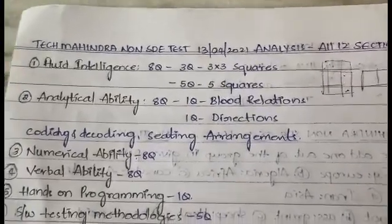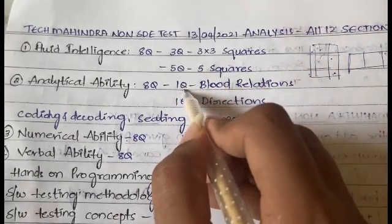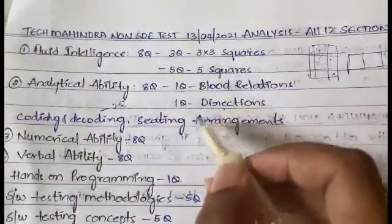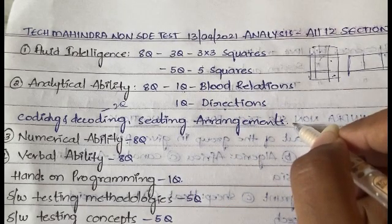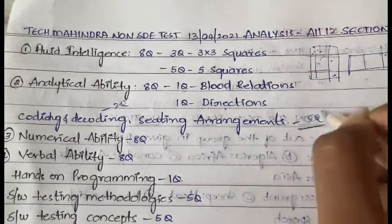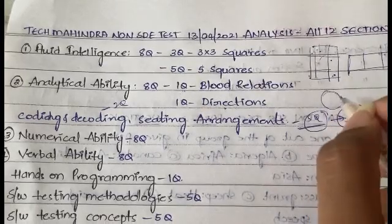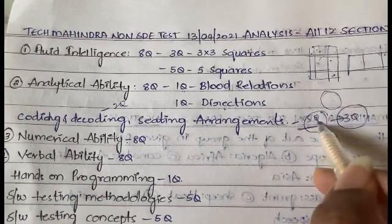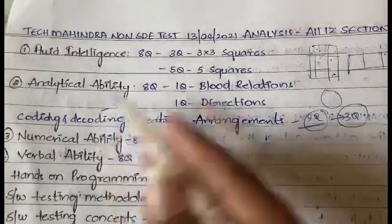The second section is Analytical Ability with eight questions total. One question is from blood relations, one from directions, and two from coding and decoding. From seating arrangements you get around five questions — three were about circular arrangements such as sitting around a circle or table, and two were normal seating questions like positions in a row.